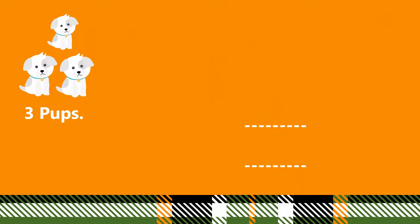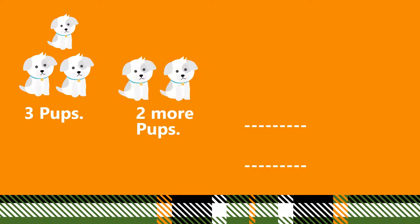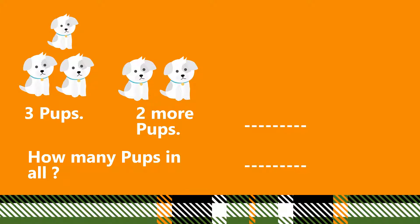Let us learn Addition Story Sums with the help of some examples. Here you can see three puppies. If we add two more puppies, then what will be the answer? How many pups in all?